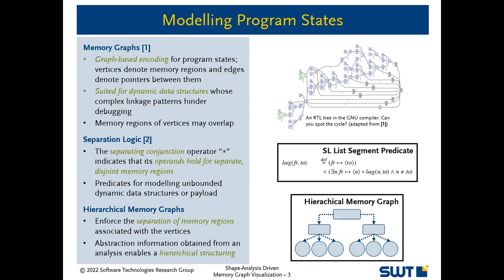There exist different notions for modeling program states. Memory graphs are a graph-based encoding where vertices denote memory regions and edges denote pointers between them. Such a graph-based encoding lends itself to encode and visualize the complex linkage patterns exhibited by dynamic data structures.